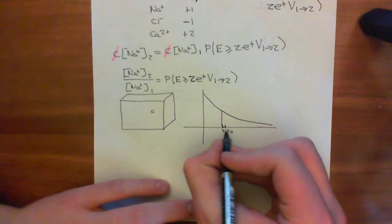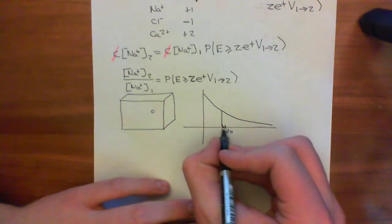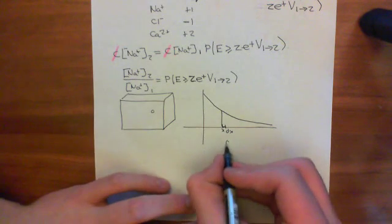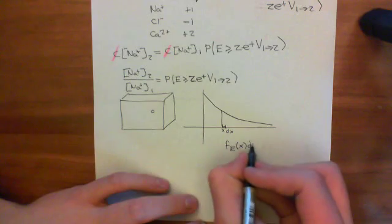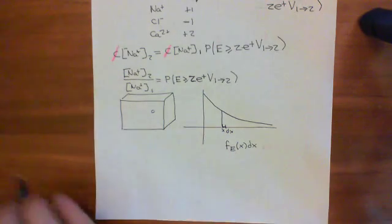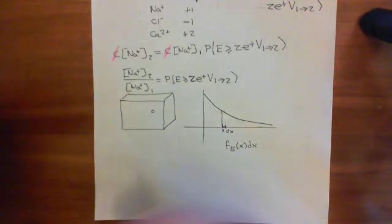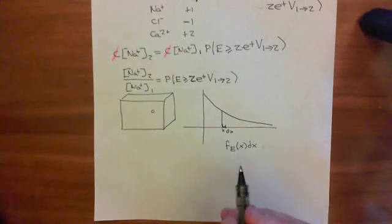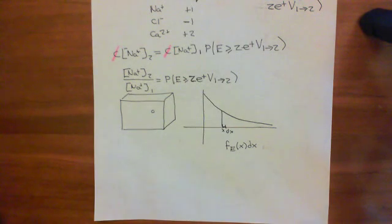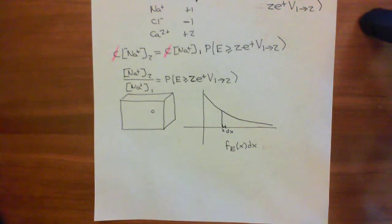You're really asking what's the probability that your energy is within that little interval, and that is approximately going to equal this probability density function evaluated at x times dx. What we want to know is what is the probability that the energy is going to be greater than or equal to Z — the charge on the ion in question — times the charge on the proton times the voltage from compartment 1 to compartment 2.